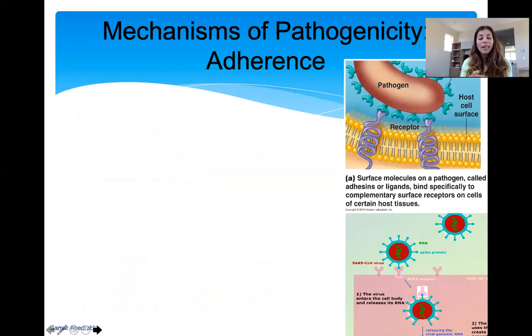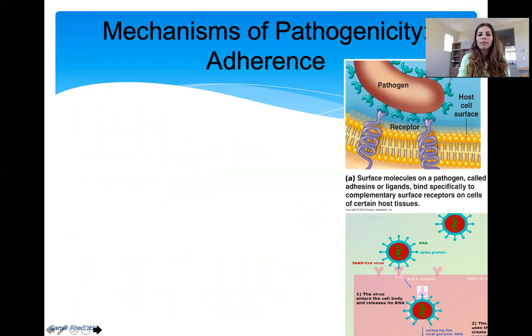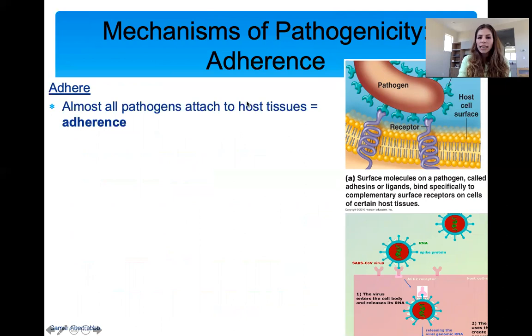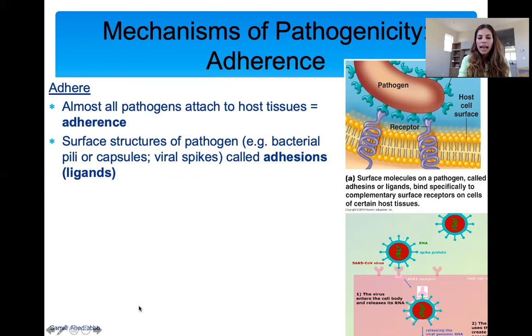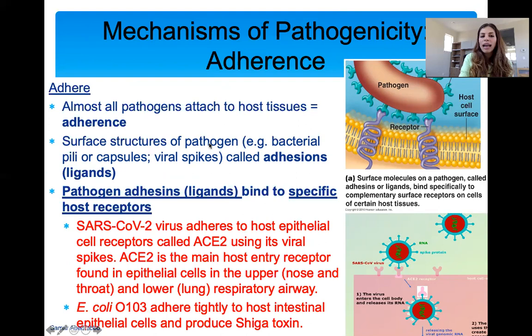After a microbe enters, it has to adhere or stick to your cells — if it doesn't, it's not going to cause disease, which is why we're not sick all the time even though many microbes are getting in through your nose, skin, and eyes. Pathogens will attach to your cells through cell receptors. Our cells have receptors, and pathogens have adhesions they use to stick to your cell receptors. These adhesions can be pili or capsules on bacteria, or spikes on viruses.